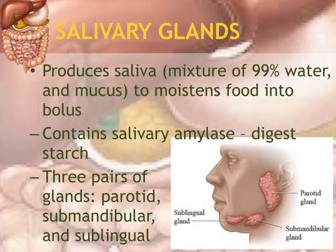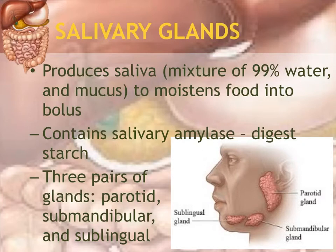Salivary glands produce saliva, which consists of a mixture of 99% water and mucus. The watery part allows food particles to stick together to create a bolus, which is a ball of food. The mucus coats the bolus — since mucus is slimy, it makes the bolus slippery so it can pass through the digestive tract much more easily.